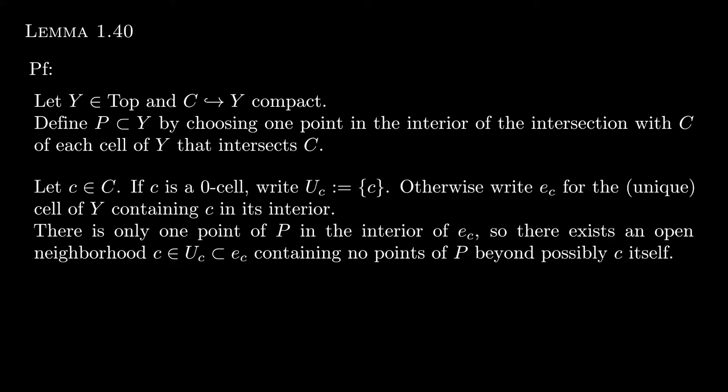Now let's see B and C. If C is a zero cell, let UC represent the topological space consisting of one element, namely C. Otherwise, write EC for the unique cell of Y containing C in its interior. Now, there's only one point of P in the interior of EC by construction. So we can construct or say that there exists an open neighborhood UC containing C that contains no points of P beyond possibly C itself, which would occur precisely in the case that C is the chosen point in P, if C is in P.